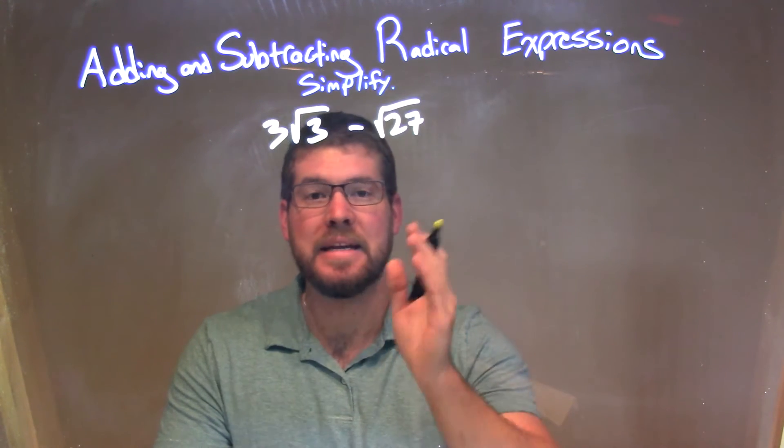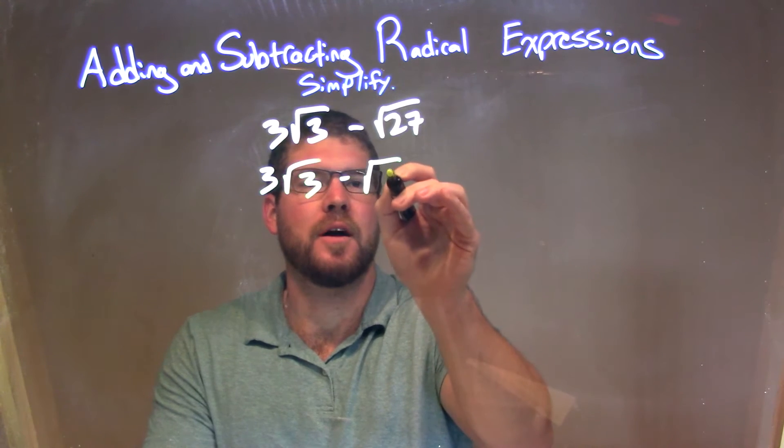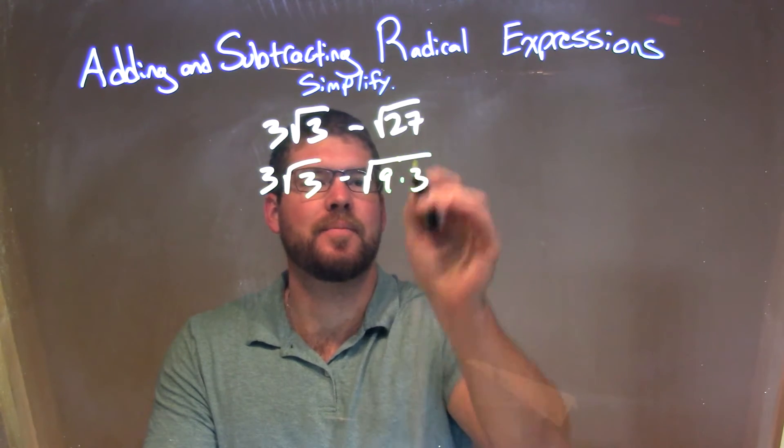So I can break down 27 to be 9 times 3. So I have 3 square root of 3 minus the square root of 9 times 3 here.